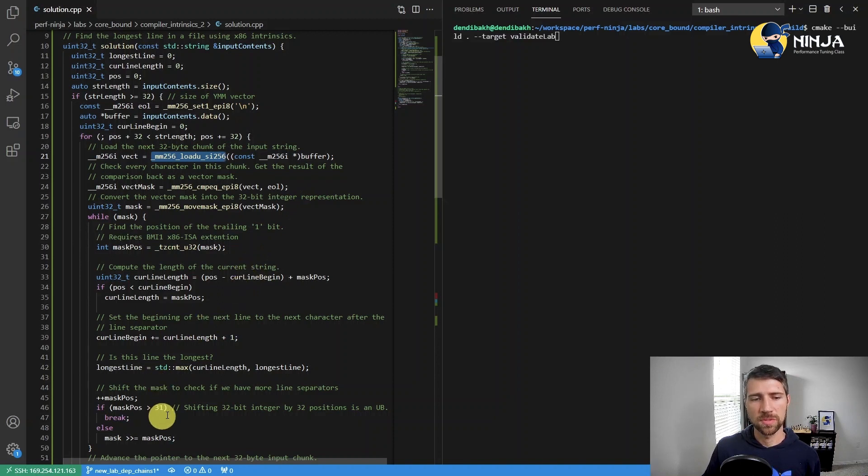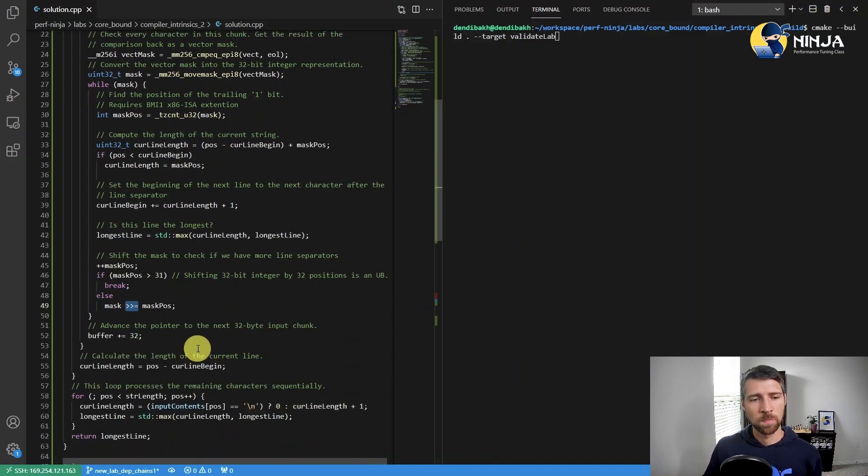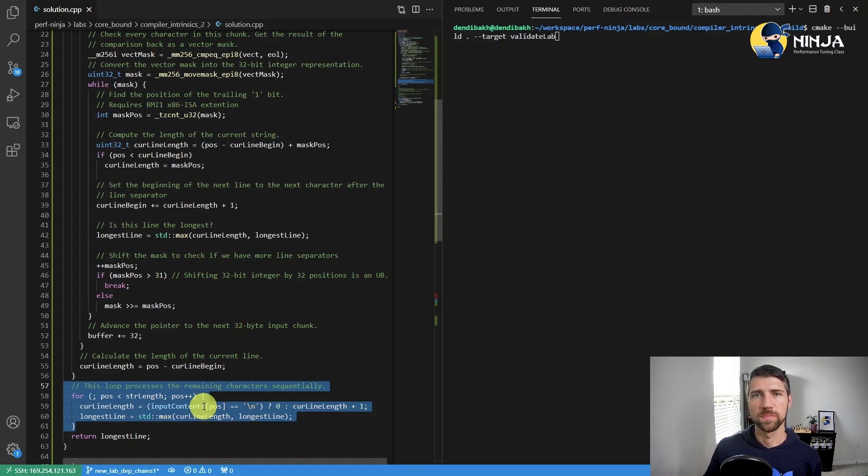And this is again, the reason why I'm using right shift instead of left shift, as I showed earlier. And then the second thing is that we still have a sequential loop for processing the remainder of the string, because usually the string is not a multiple of 32 characters. So yeah, that's the code as usual.